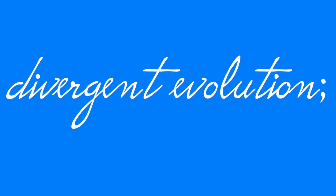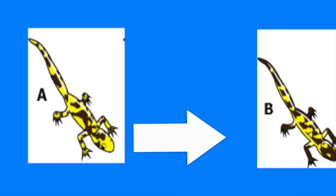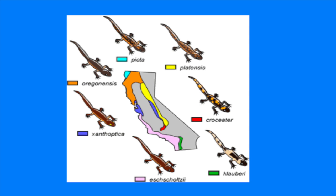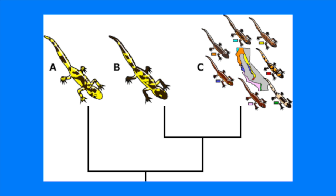This is believed to be caused by divergent evolution, a process in which descendants of a single ancestor diversify into species that each fit different parts of the environment. This means that each species of each organism must have descended from a common ancestor.